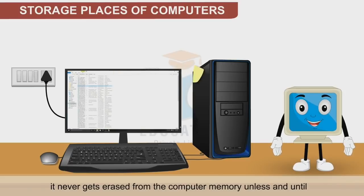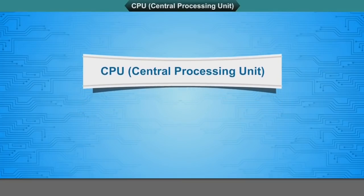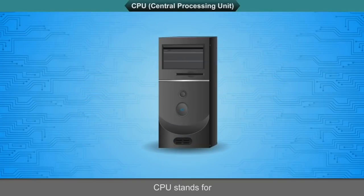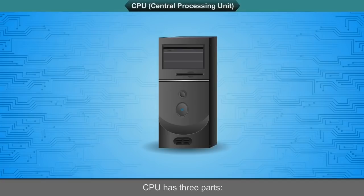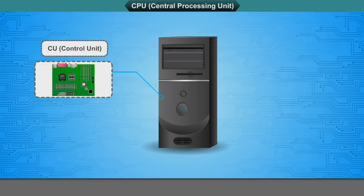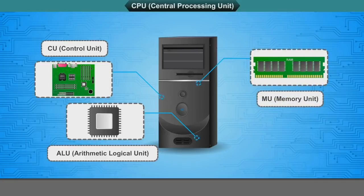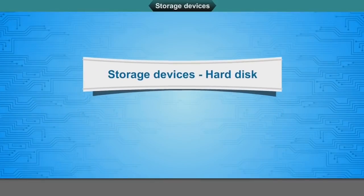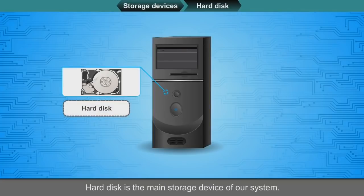Once information is stored in the memory of a computer, it never gets erased unless that information is deleted. The CPU is also called the brain of the computer — all the processing work is done by the CPU. The CPU has three parts: the Control Unit, the ALU (Arithmetic Logical Unit), and the Memory Unit. The hard disk is the main storage device of a system and permanently stores large amounts of data.